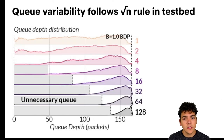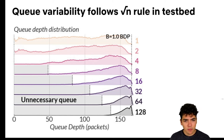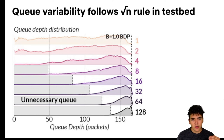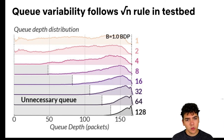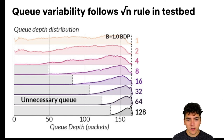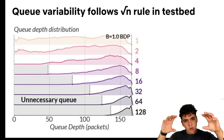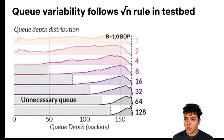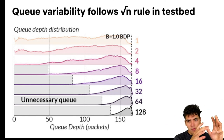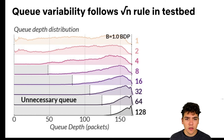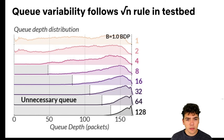We wanted to argue that these conditions hold in practice, so we ran measurements in a testbed. This graph shows how q-depth responds with different numbers of TCP flows sharing the same link. Each row is a different number of flows, ranging from one flow at the top to 128 flows at the bottom, showing the distribution of q-depth. With one flow, the distribution is spread out. As we increase the number of flows, the distribution shifts right and we build up a large standing queue. This large standing queue suggests we can make the buffer smaller.